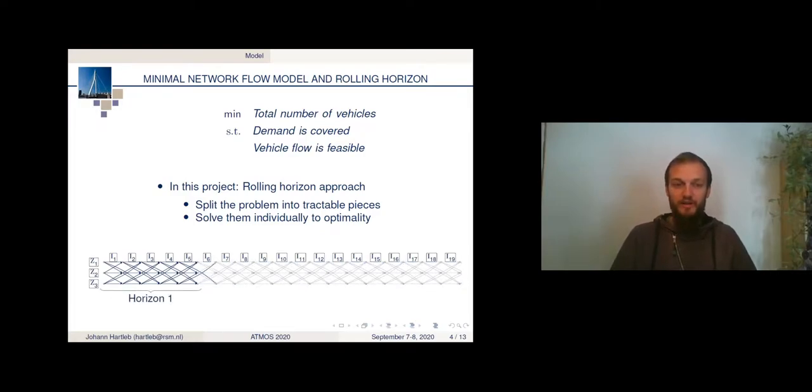So it basically looks like this. We have horizon 1 here. In this case, it covers five time intervals, the first five ones. We solve this one to optimality. We obtain the solution, fix it, and go over to the next horizon. And there, we again find a solution for this one, fix it, and go on. And this, step by step, solves the whole time frame from the very start to the very end.